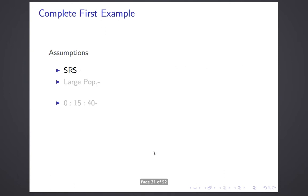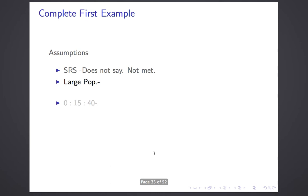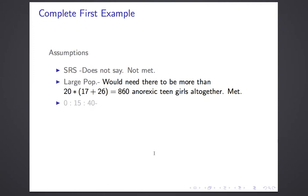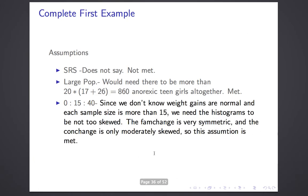Let's check our assumptions. Simple random sample: it was all the girls who came into the clinic in a given month — certainly not a simple random sample, so that's not met. Large population: it's a single sample, so we combine the 17 and 26 to get 43, which means we need there to be 860 anorexic teen girls in the world — that's met. For the 0-15-40 rule, we don't know the weight gains are normal, and the sample sizes of 17 and 26 are both between 15 and 40, so we have to look at the histograms.